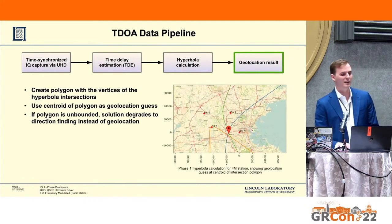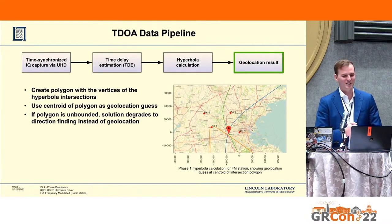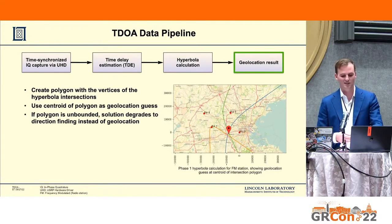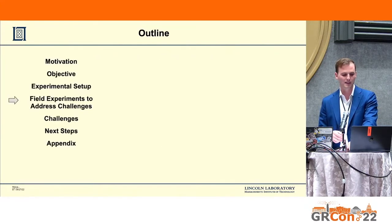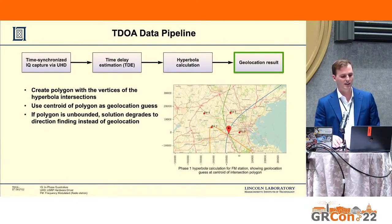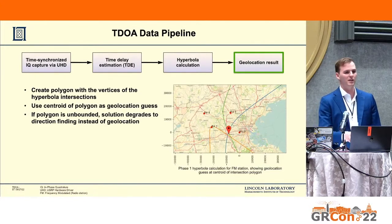This geolocation result creates a polygon. In a perfect world these would all intersect on the same point, but that's not how this works. You end up with varying degrees of intersection, and we use a simple approach to determine the centroid of that polygon as our estimation. There are multiple ways to do better guessing — this is another area with opportunities for improvement. It's also worth noting that if that polygon is unbounded, a side effect of TDOA is that it degrades to direction finding, which can actually be quite useful depending on the situation.